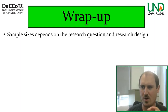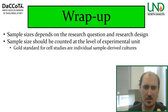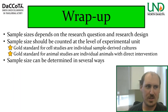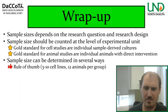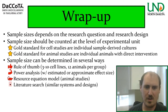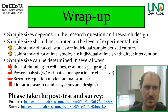To wrap up: sample sizes depend on the research question and research design, and should be counted at the level of the experimental unit — our unit of replication. The gold standard for cell studies is individual sample-derived cultures if you can get them. For animal studies, it's individual animals with direct intervention, or tumor level if you have that specific design. Actual sample size can be determined by: a rule of thumb (3 to 10 cell lines or 12 animals per group), a power analysis with an estimated or approximate effect size, the resource equation model for animal studies, or a literature search of similar systems and designs. Please take the post-test and survey — links are in the description below.